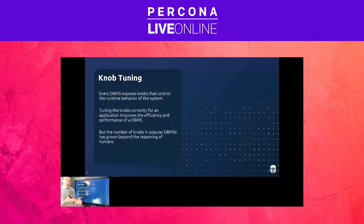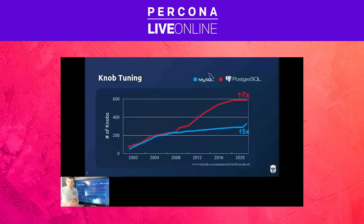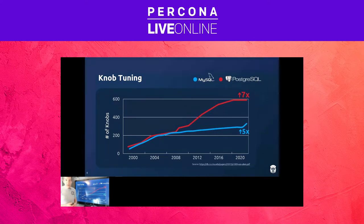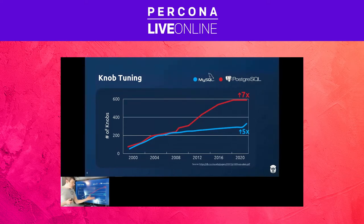There's no way humans can actually tune every single database for the application running on it. To give you a sense of how bad this problem is, my PhD student did a survey looking at the last 20-year release history of the two most popular open source databases, Postgres and MySQL. For every new release, she counted the number of configuration knobs listed in the documentation. In the beginning of the century, both MySQL and Postgres had under 100 knobs. But over 20 years, MySQL grew by 7x and Postgres grew by 5x.